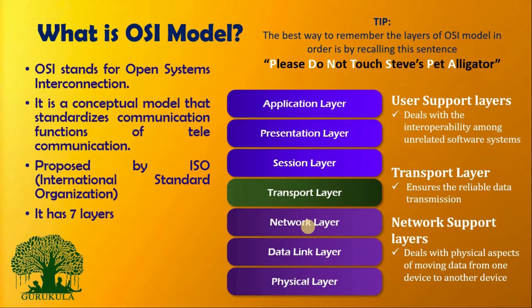As per the standard, the OSI model has seven layers. To name the seven layers: we have Physical, Data Link, Network, Transport, Session, Presentation, and Application. These are all the seven layers present in the OSI model, and each and every layer has its own functions.